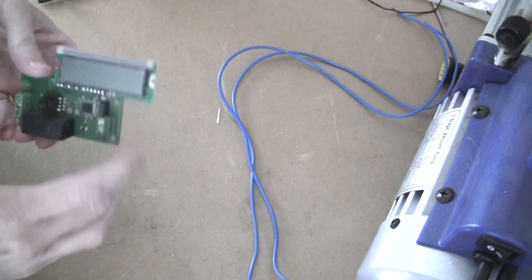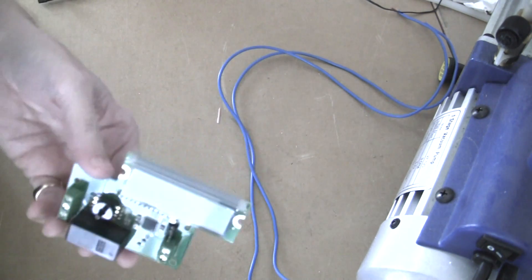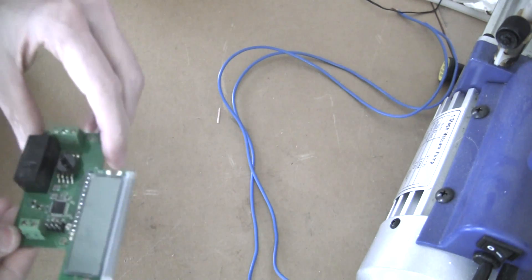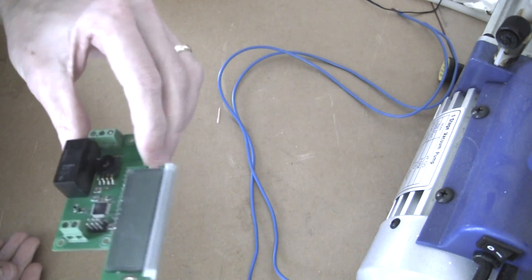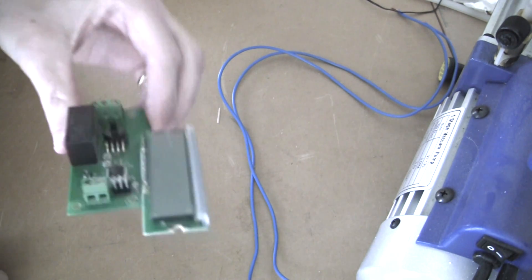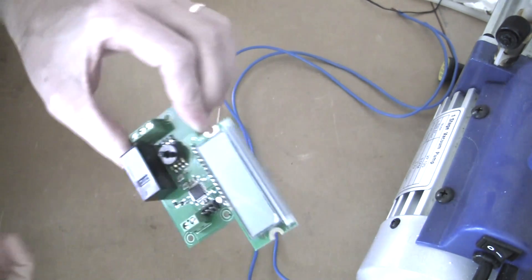I'm helping out a customer with his pick-and-place machine, and this would be a good opportunity to show how the vacuum sensor, the vacuum pressure controller, works.